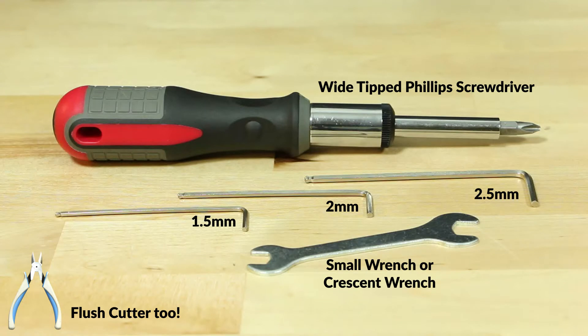Here are the tools required for installation. You will need 1.5, 2, and 2.5 millimeter allen wrenches and a small wrench and a wide tipped Phillips screwdriver. Most of these tools should have been included in your Ender 3 kit.